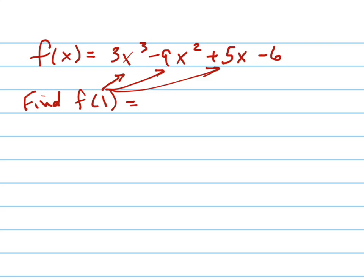What's f of 1? It's going to be 3 minus 9 plus 5 minus 6. That was pretty easy to do because we're just plugging in 1, which equals negative 6 minus 1, which equals negative 7.